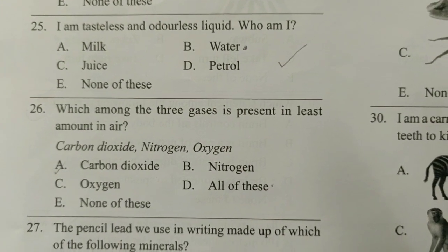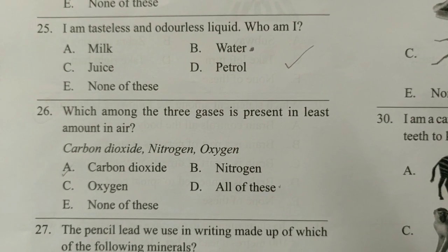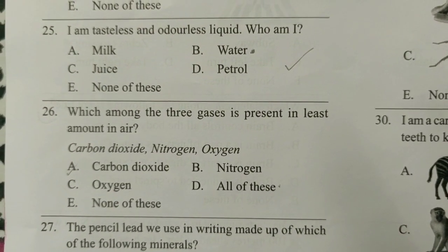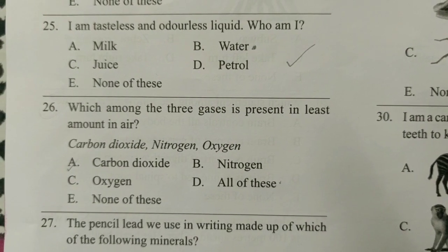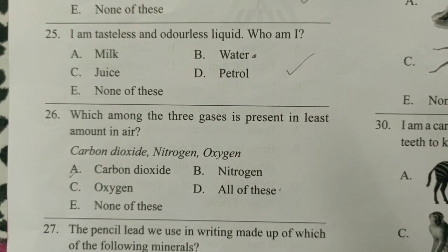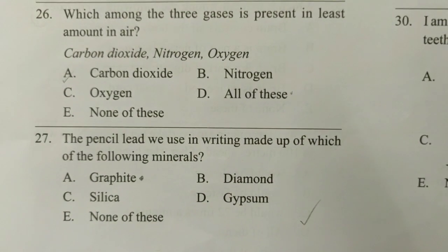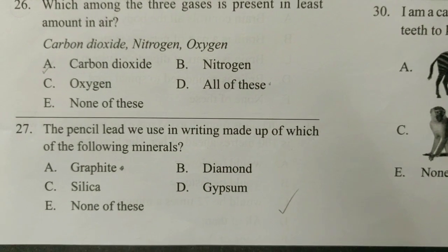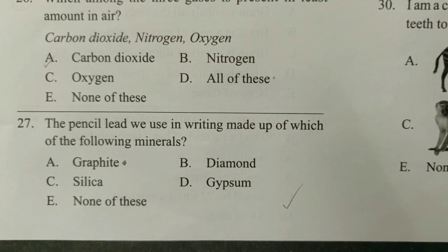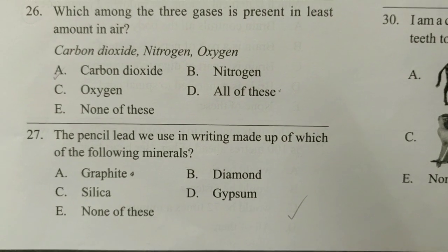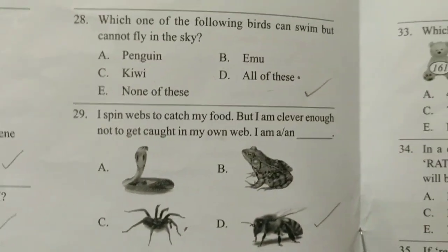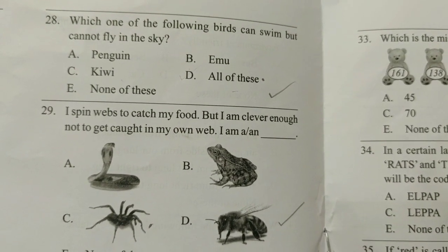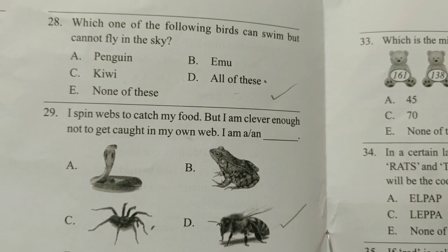Question 25: Which among the three gases is present in the least amount in air? I am not sure about this option, so write it in the comments below — no information is provided in the study material. Question 26: The pencil lead we use in writing is made up of which mineral? The answer is A — graphite — from Chapter 8. Question 27: Which one of the following birds can swim but cannot fly? The answer is A, from Chapter 2.